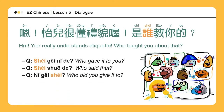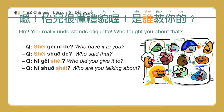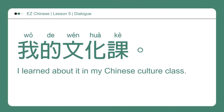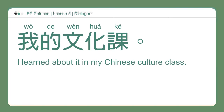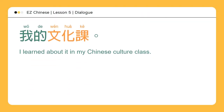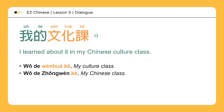你给谁？Who did you give it to? 你说谁？Who are you talking about? 我的文化课。I learned about it in my Chinese culture class. 我的文化课 — my culture class. 我的中文课 — my Chinese class. 我的书法课 — my calligraphy class.